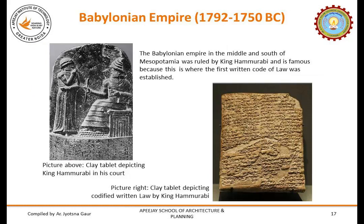The Babylonian Empire in the middle and south of Mesopotamia was ruled by King Hammurabi and is famous as the place where the first written code of law was established. As shown in the pictures, the clay tablet depicts King Hammurabi and his code and the codified written law. The Babylonian rule was short-lived and was invaded by Kassites and Hittites. After about 600 years, the Assyrian Empire took shape in Mesopotamia.